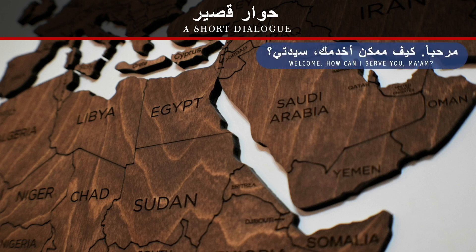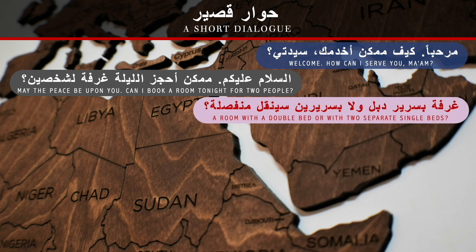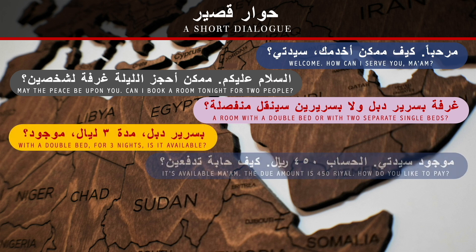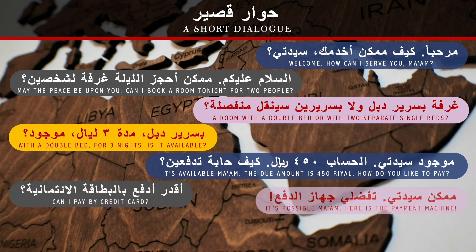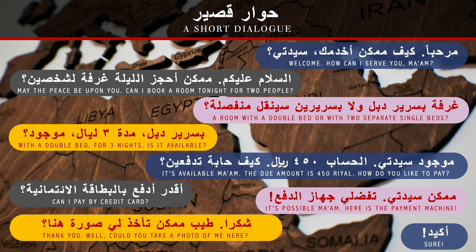The same dialogue in Saudi dialect. — مرحبا. كيف ممكن أخدمك سيدتي؟ — السلام عليكم. ممكن أحجز الليلة غرفة لشخصين؟ — غرفة بسرير دبل ولا بسريرين single مفصلين؟ — بسرير دبل، مدة ثلاث ليالي. — موجود سيدتي. الحساب 450 ريال. كيف حابة تدفعين؟ — أقدر أدفع بالبطاقة الائتمانية. — ممكن سيدتي. تفضلي جهاز الدفع. — شكراً. طيب، ممكن تأخذ لي صورة هنا؟ — أكيد.